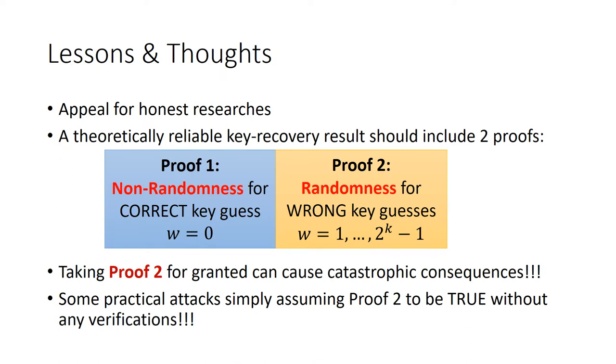Finally, at EuroCrypt 2020, the conclusion on Fu's results and remedy is drawn by Hao et al. using the three-subset division property technique. Instead of blaming Fu and appealing for honest research, we should learn a more important lesson. A theoretically reliable key recovery result should include two proofs. First, there is detectable non-randomness when the key guess is correct. Second, randomness is verified when the key guess is wrong. Taking proof 2 for granted can cause catastrophic consequences, but the cruel fact is that some practical attacks due to lack of computational resources simply assume proof 2 to be true without any verification.